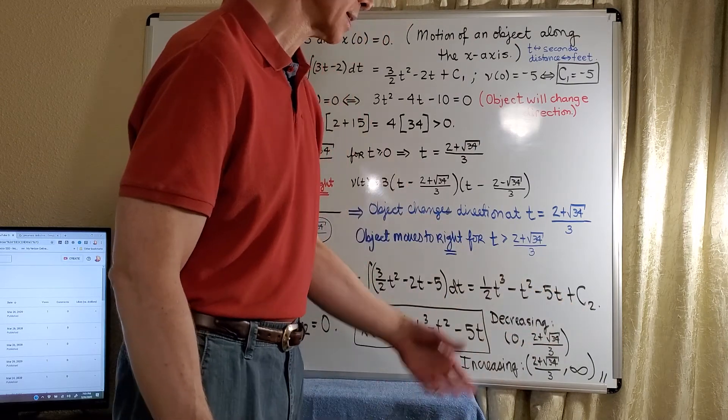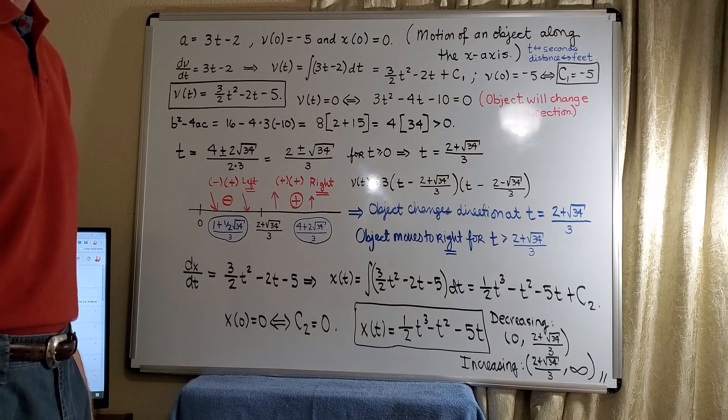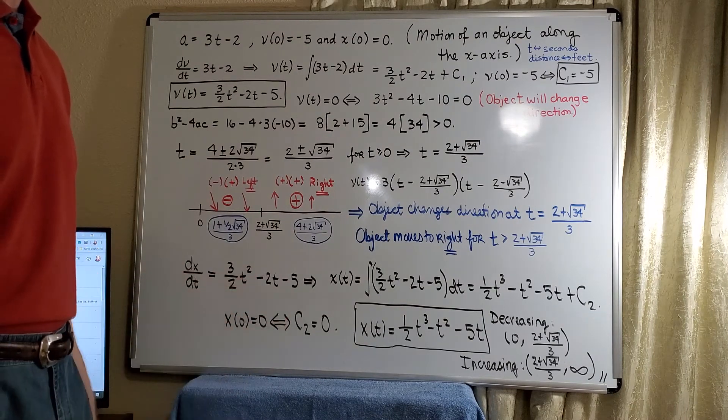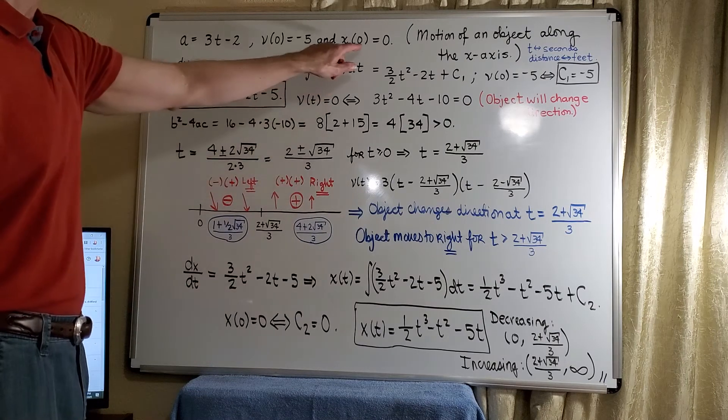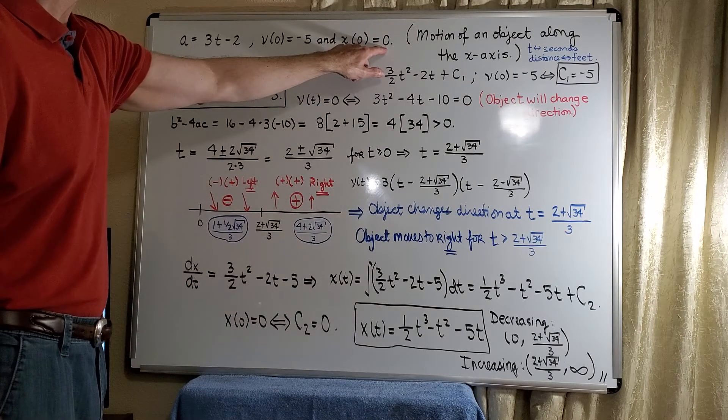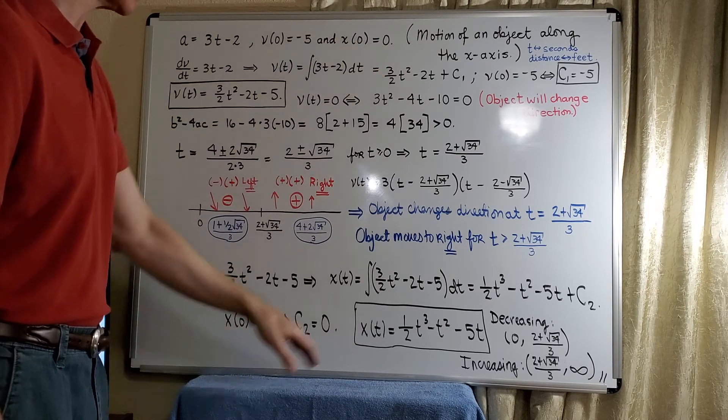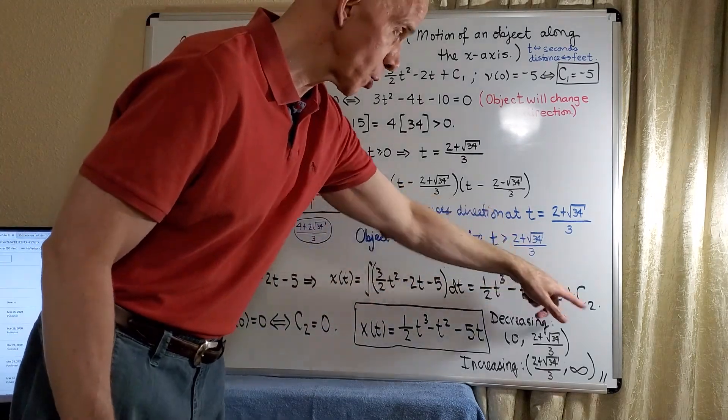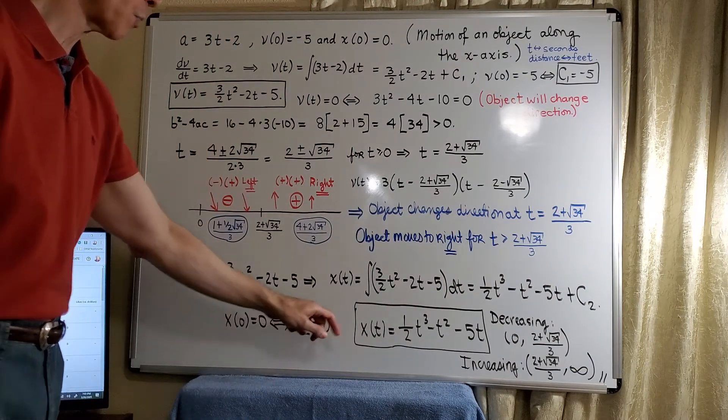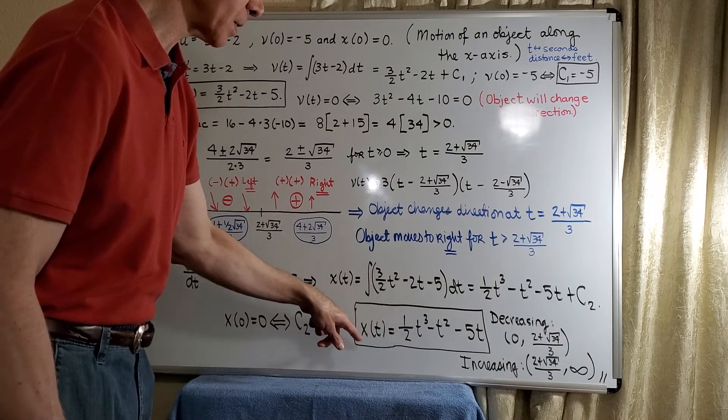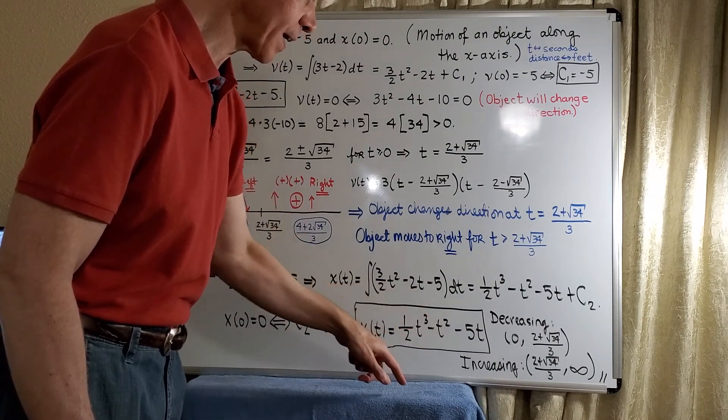And now at time t equals 0, the position is 0. That is, the object is at the origin. And so that zeros out all the terms except for c2. So c2 must be 0. And so we have a formula for our position function, which is 1/2 t cubed minus t squared minus 5t.